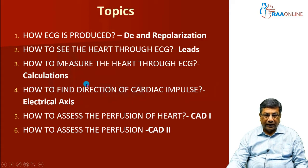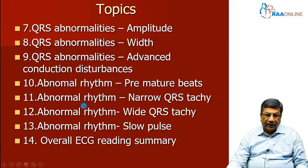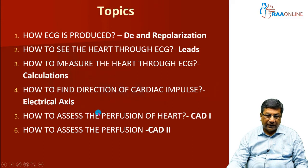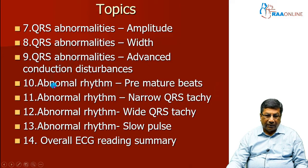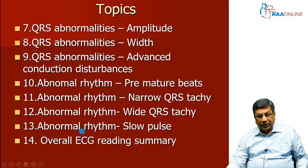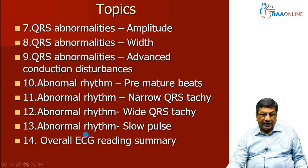Subsequently, we look at other programs. The next topics cover QRS abnormalities in the form of chamber enlargement, QRS abnormality in width, and QRS abnormality in fascicular blocks and advanced conduction disturbances. Then we come to coronary heart disease and assess the perfusion and viability of the heart. We also look at arrhythmias in four topics: premature beats, narrow QRS complex tachycardia, wide QRS complex tachycardia, and approach to slow pulse. The last topic gives an overall reading summary covering all 13 topics and how to read the ECG.